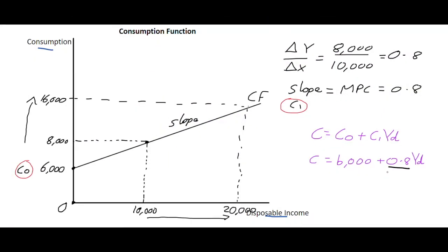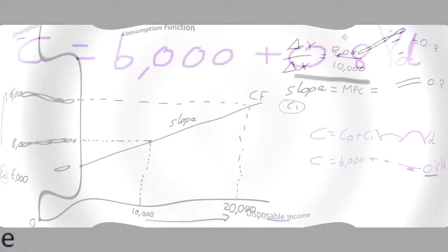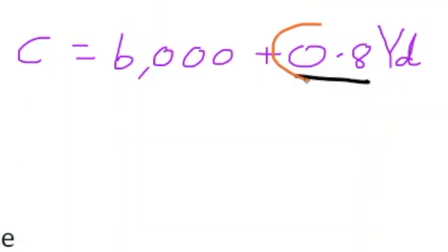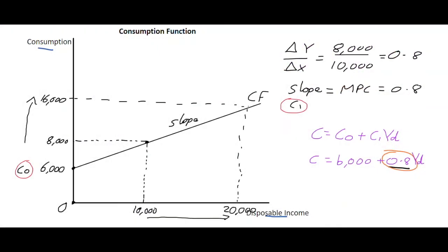What we can also say about this equation is that it may change in an economy. For example, if people are less confident about spending in the economy, the MPC value, the 0.8 here, may decrease. For example during a recession, if people are spending less money out of additional income, what will happen is with a decrease in the MPC the consumption function becomes flatter.